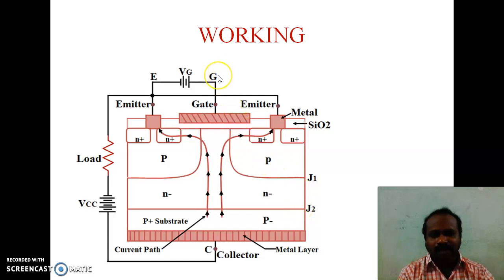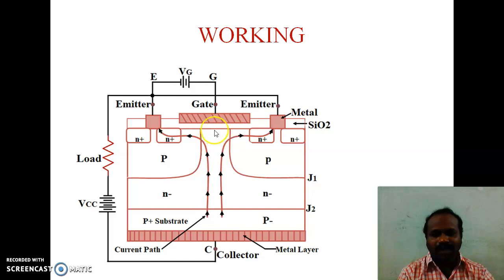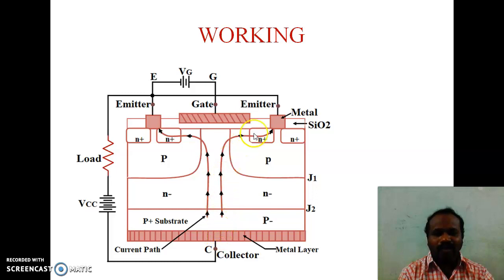Now, we apply a positive voltage to the gate with respect to the emitter. Already the collector is made positive with respect to the emitter; now we also make the gate positive with respect to the emitter. An N-channel is formed in the upper part of the P-layer, under the gate in the P-region. Due to this, current can flow from collector to emitter through this P-N-P path.